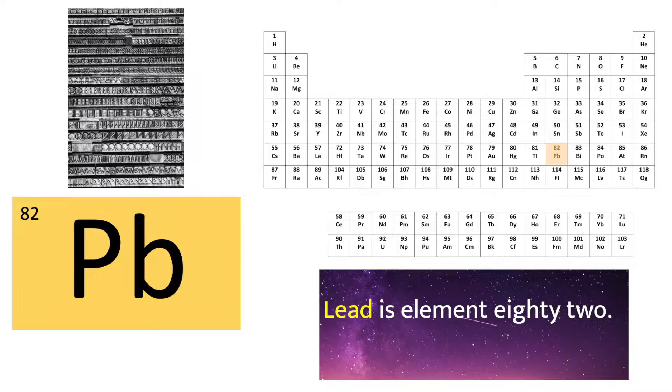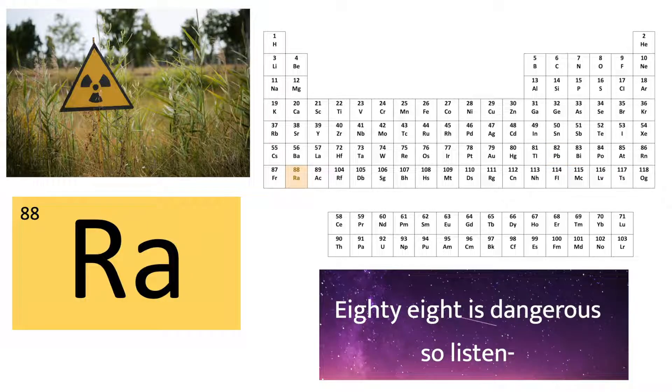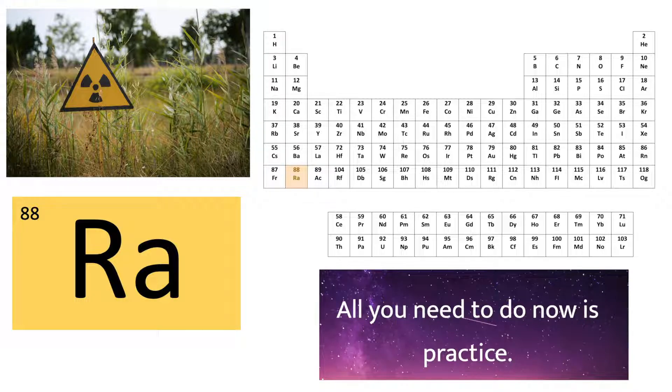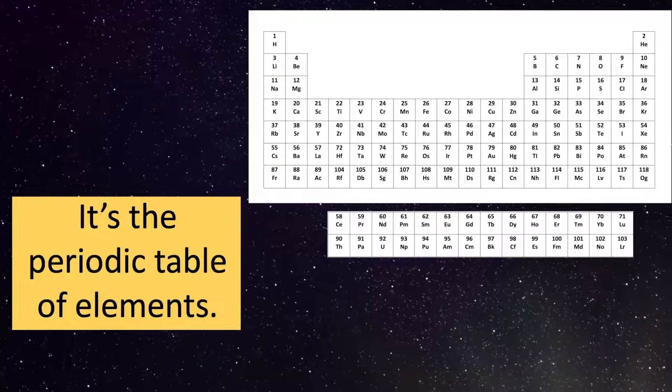Lead is element 82. So many different ways it can be used. From insulation to ammunition. 88 is dangerous so listen. Radium, it's radioactive. All you need to do now is practice.